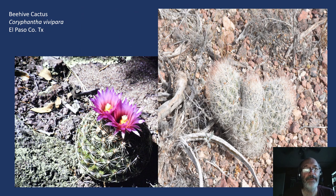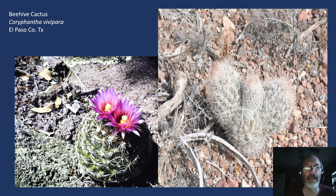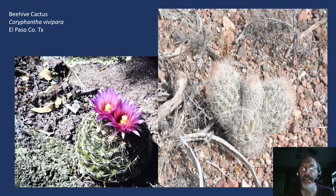Coryphantha vivipara, the beehive cactus. This is a very common cactus over much of West Texas, southern Arizona, New Mexico, Colorado — very widespread, and always a wonderful cactus to run into with very attractive flowers. Another one that's easy to keep in cultivation. One of my favorites.